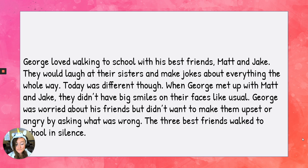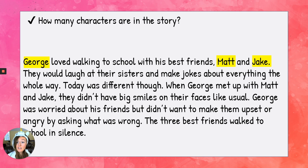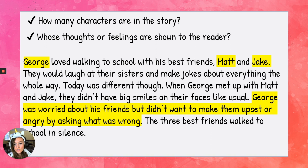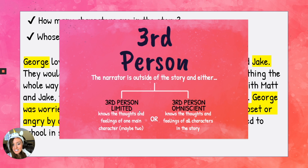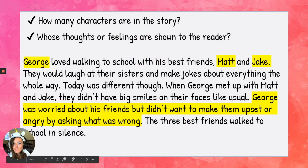So first of all, how many characters are in this story? There are three: George, Matt, and Jake. This is a third person narrator — what we're trying to figure out is if it's third person limited or third person omniscient. Do they know what only one character knows, or everything all characters know? Here we know that George was worried — that's how George feels. We get what he's thinking about the other characters, but we never actually find out what Matt and Jake think and feel. So this is third person limited, because we only know George's thoughts and feelings.